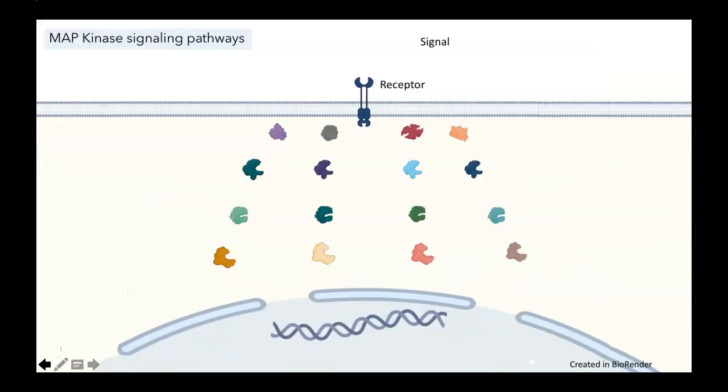MAP kinase, mitogen-activated protein kinase signaling cascades, are key players that regulate some really important cellular processes. These pathways are linked to cell proliferation and differentiation, programmed cell death, and the cell's stress responses. The pathways are critical for normal development, and mutations in these pathways are implicated in many different cancers, so they are important for us to know about.